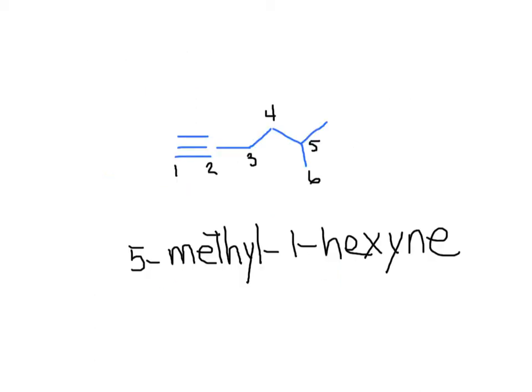This is another example of a terminal alkyne. It is a one-hexyne, because it is six carbons long, and it has the triple bond between carbon number one and two. It is a 5-methyl, because it has a methyl group attached to carbon number five.